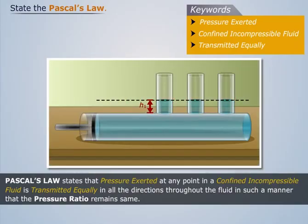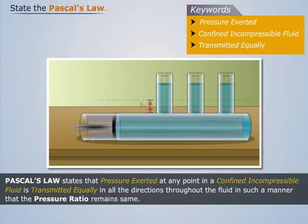Now, if we apply a force on the piston, we see that the water level rises in all three vertical tubes. Again, we see that the level of water in all three tubes is at the same height.